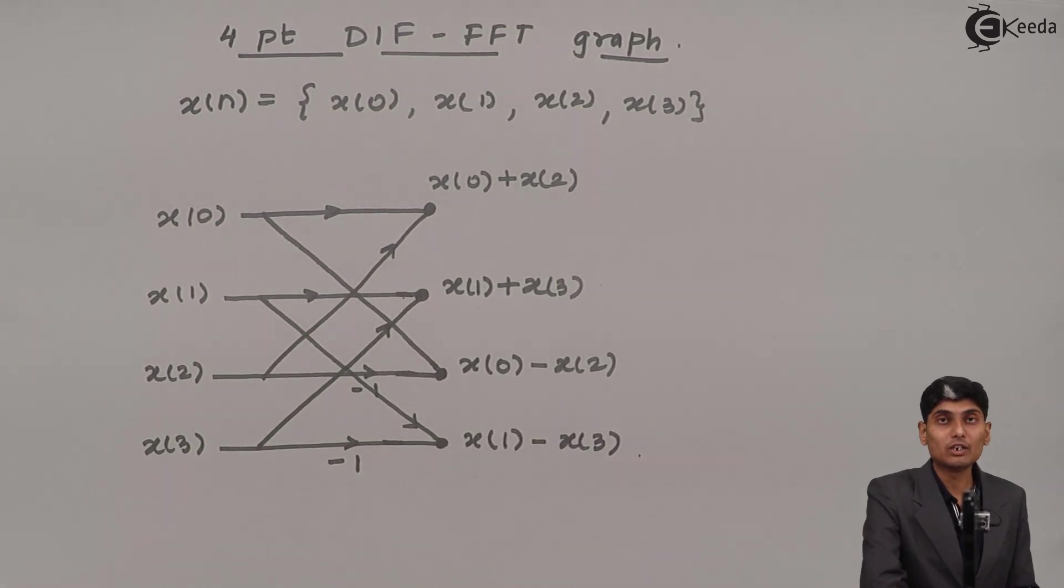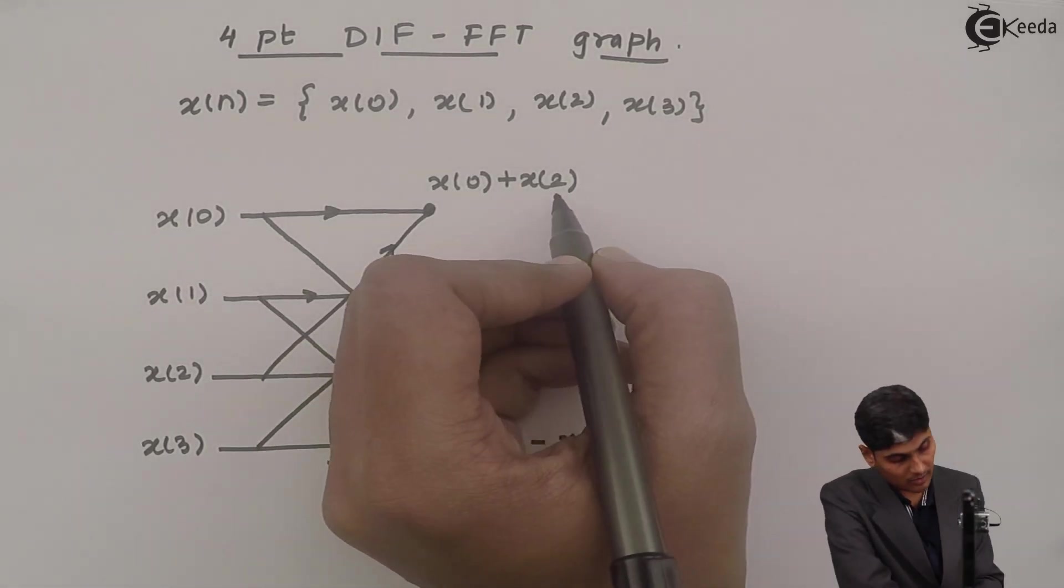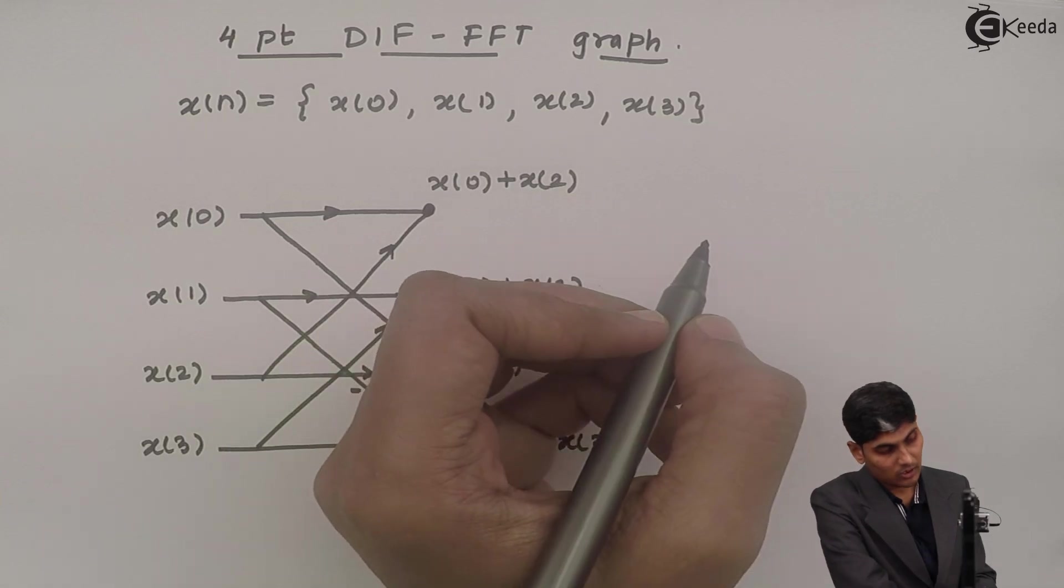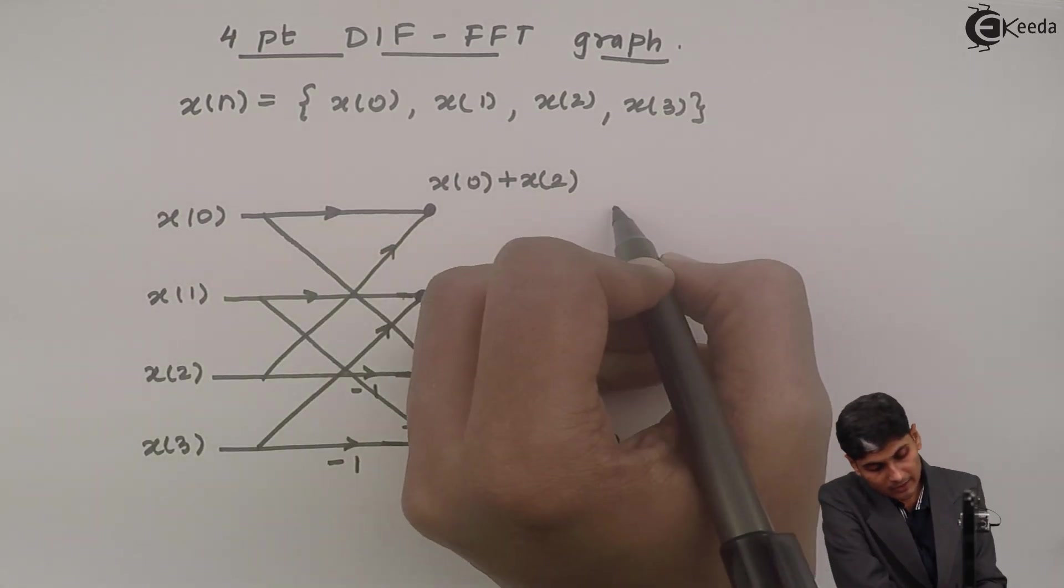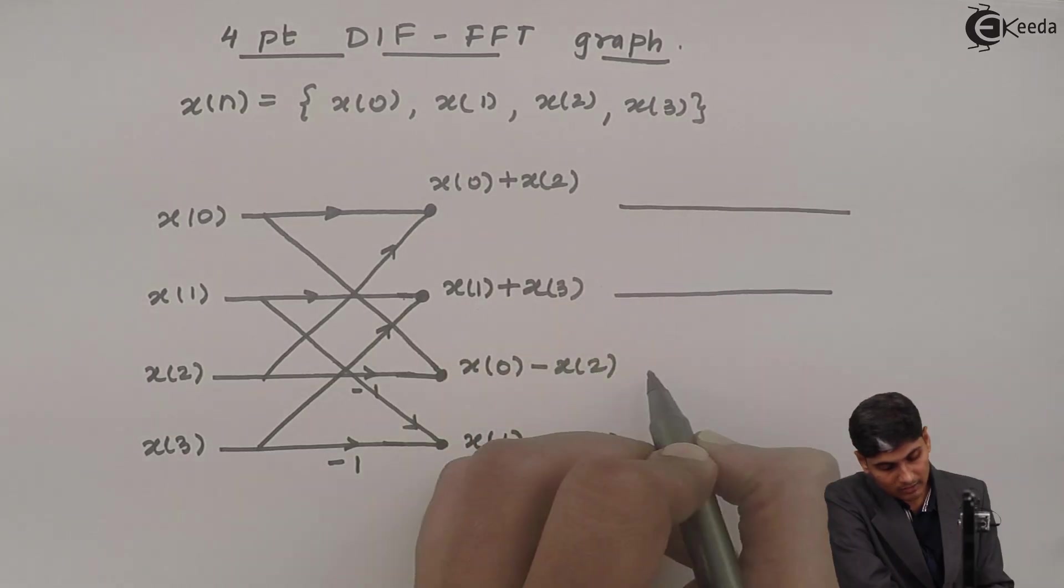Now this becomes my new inputs. In the next stage, this gets as an input to the next stage. And the next stage will be, again I will draw 4 lines. That are the 4 inputs.